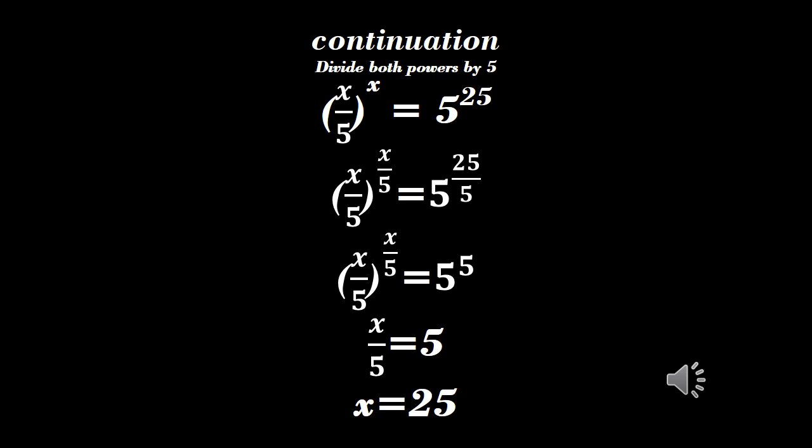Now we can equate the bases. We have x over 5 equals 5. Then if we cross multiply, x equals 25.